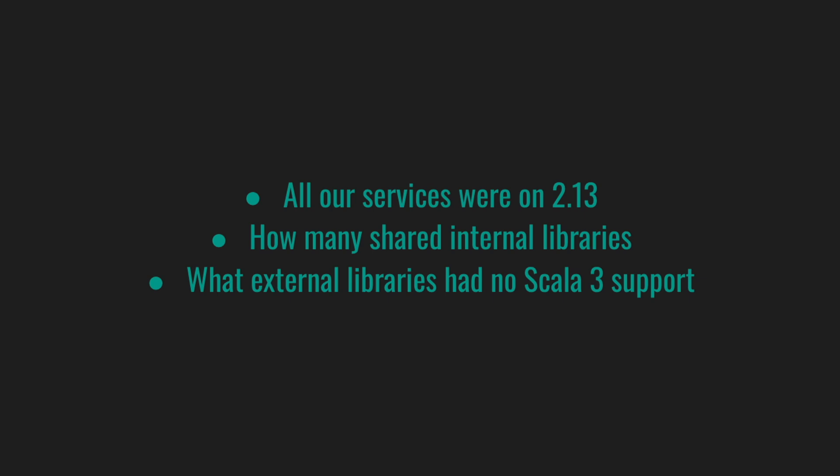By this point, we knew that all our services were on 2.13. We knew how many internal libraries needed to be used from both Scala versions, and what external libraries had no Scala 3 support yet. What is the status? What is missing? And what can we do to deal with it? For example, a couple of libraries got a Scala 3 release by the time we were done with the investigation, and one XSource library was replaced with two lines of boilerplate.